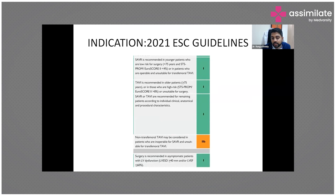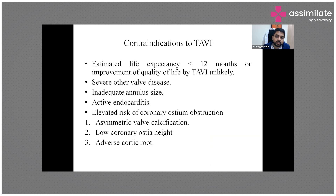Non-transfemoral TAVI may be considered in patients who are inoperable or unsuitable for transfemoral access - this carries a Class 2B indication. Surgery is recommended in asymptomatic patients with LV dysfunction if the mean diameter is greater than or equal to 40 mm or EF less than 60% - a Class 1 indication in new guidance.